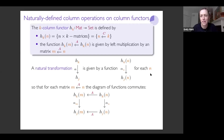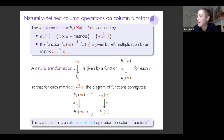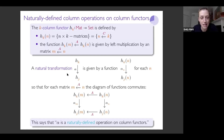So deleting the last column is a naturally defined column operation — the naturality check passes. Another example: appending a column of zeros at the end, an inclusion operation from K columns to K+1 columns. The naturality check works here too because A times the zero vector is the zero vector, so appending zeros commutes with left multiplication by A.